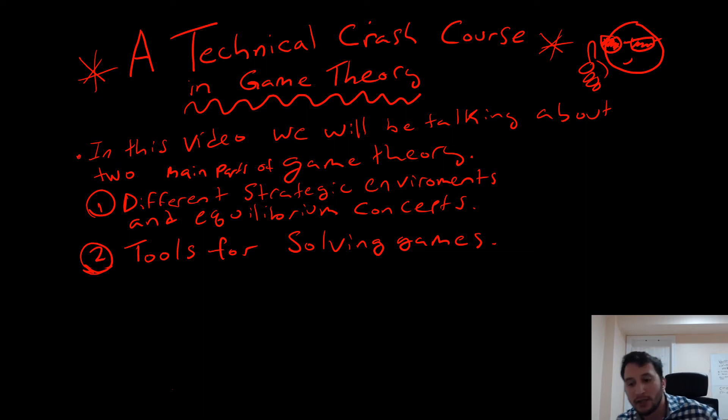What's up gamers, this is a technical crash course in game theory. This video assumes you've had some exposure to game theory but haven't quite put all the pieces together. We're going to talk about two main parts of a game theory course: first, different strategic environments and equilibrium concepts, and second, tools for solving games. Let's go.